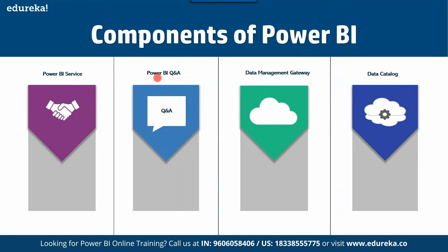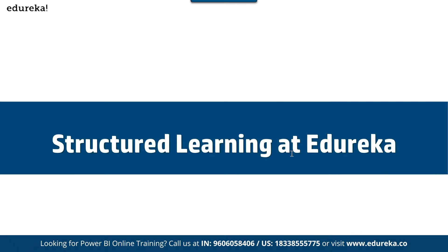Next is Power BI Q&A — you can ask questions and get immediate answers with natural language queries. Next is Data Management Gateway, also known as DMG — not DMZ, which is demilitarized zone; this is different. DMG provides periodic data refreshes and can expose your tables and objects to external devices. Finally, Data Catalog is metadata for search functionality — users can easily discover and reuse queries. These are the eight components of Power BI.